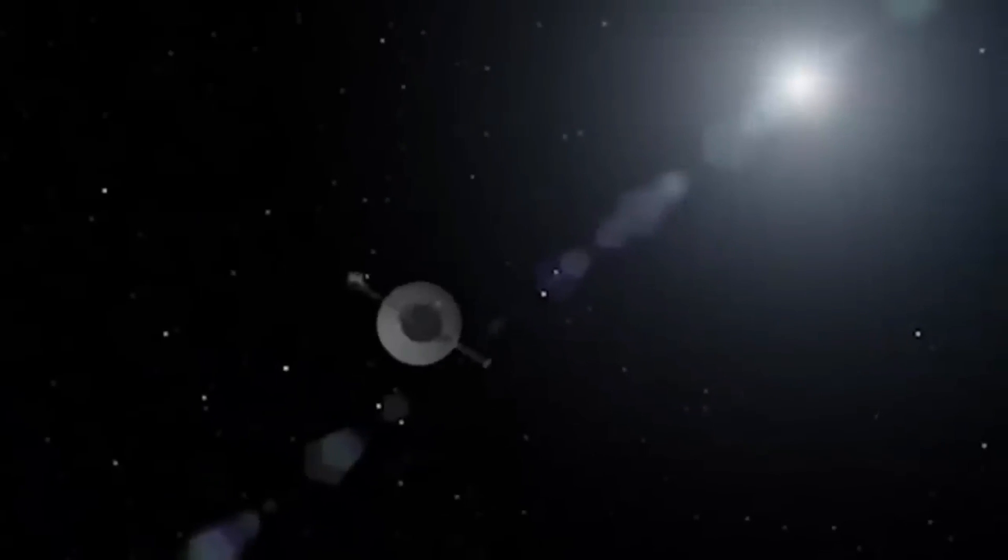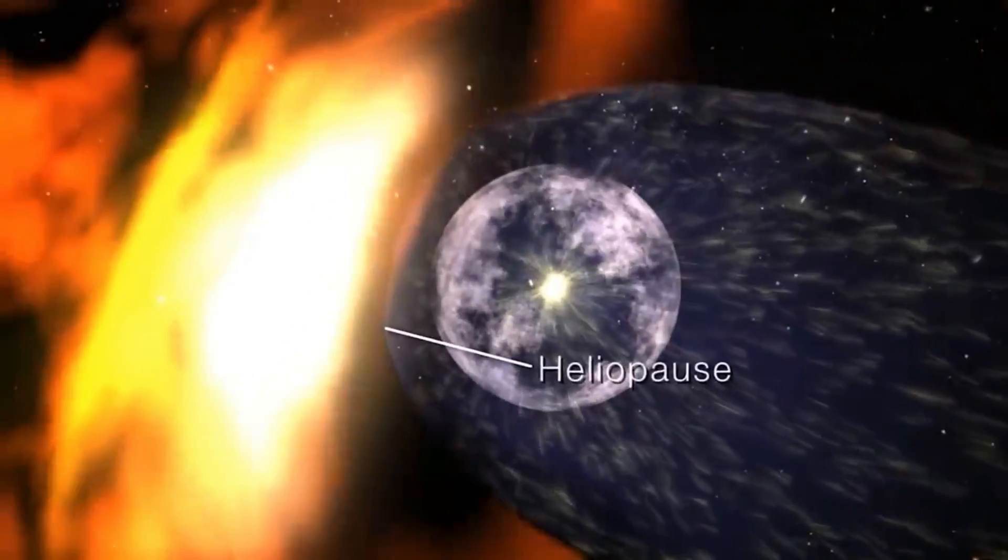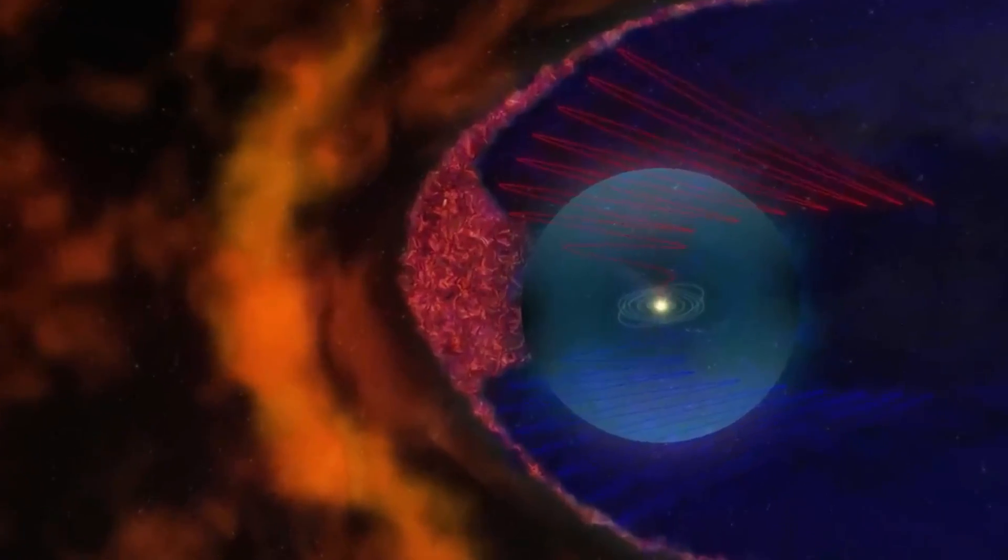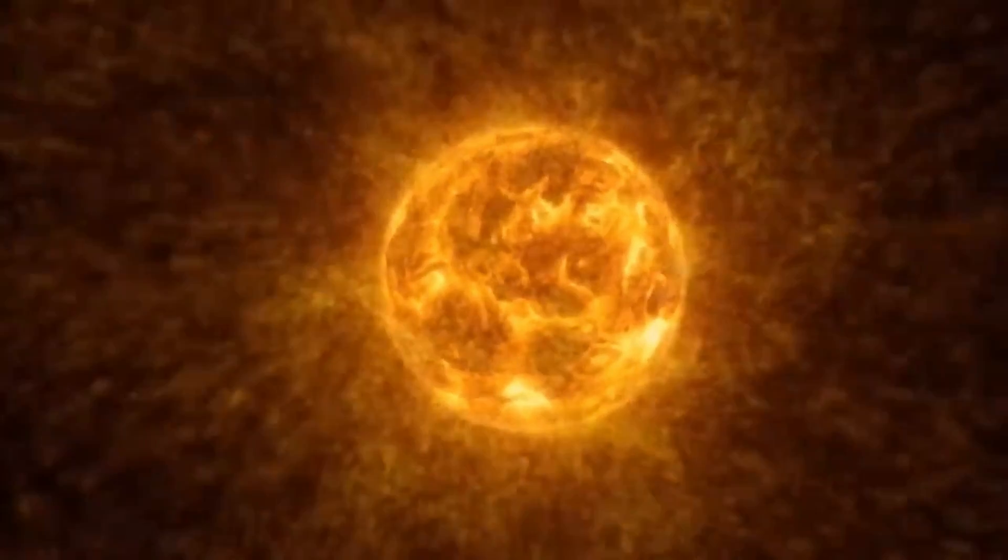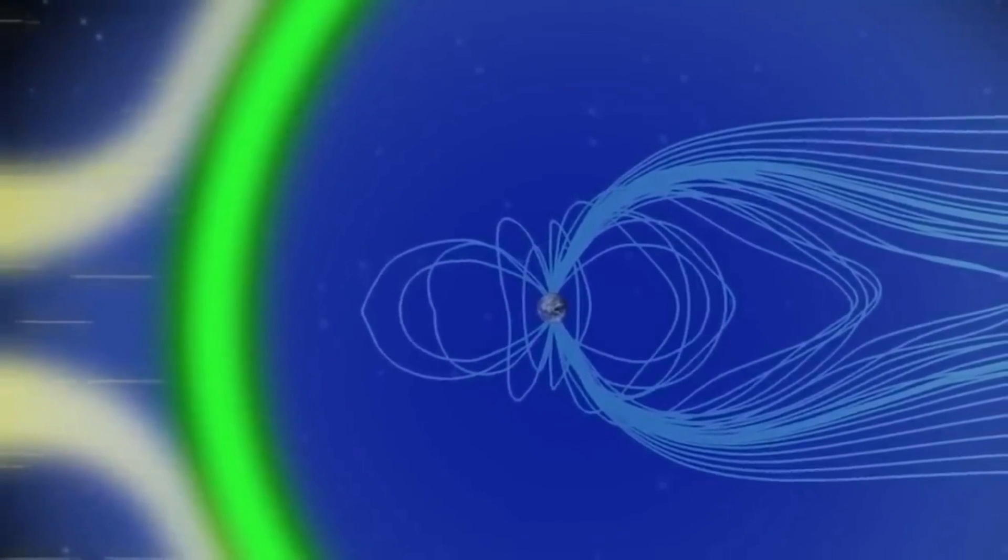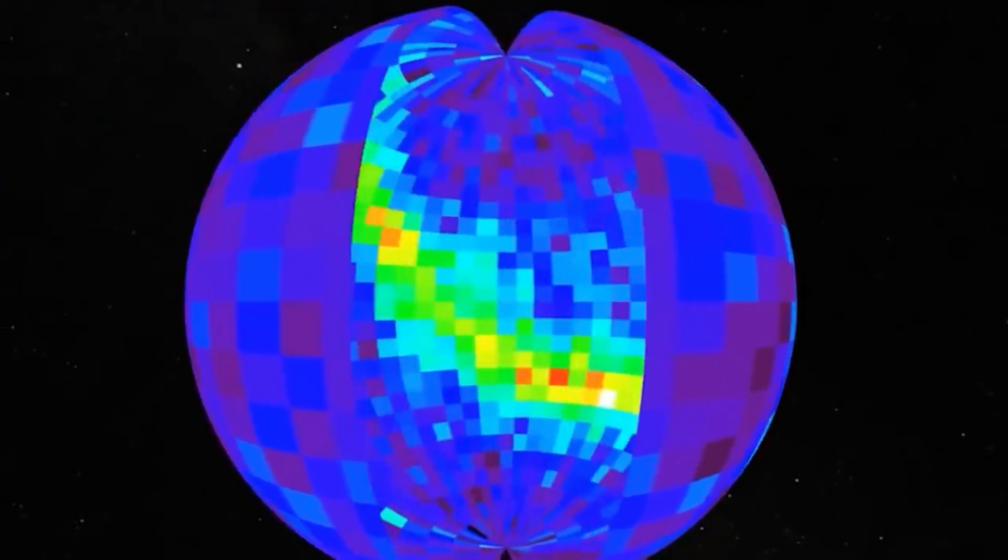Voyager 2 discovered new moons and studied the planet's atmospheres, magnetic fields, and rings during its encounters with Uranus and Neptune. The Voyager mission was extended after its planetary encounters, with both probes continuing on into interplanetary space. The probes began to study the edge of the solar system and the beginnings of interstellar space, as they traveled further and further away from the Sun.